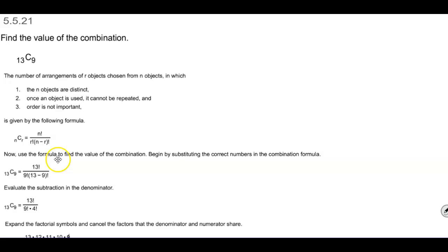So now we're going to use the formula to find the value of the combination. We're going to begin by substituting the correct numbers. If you notice the top here, we know that n represents 13 and r represents 9. So now we're going to substitute those numbers into the formula.